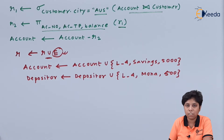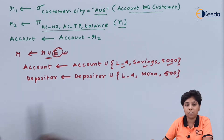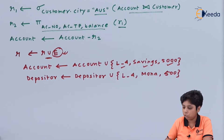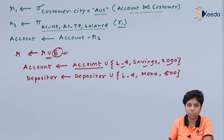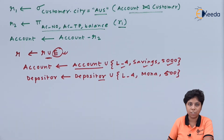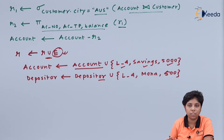Here we are adding values — that is, an account number, account type, and the balance of that account — to the existing account relation. We are appending this one record to our existing account relation as well as to the depositor relation. Now we will see some complex insertions involving a join relation or a derived relation.